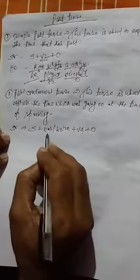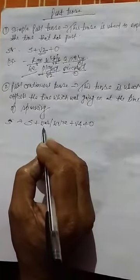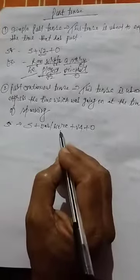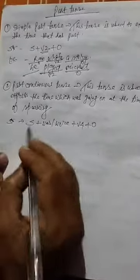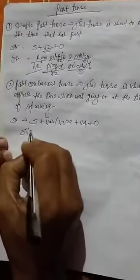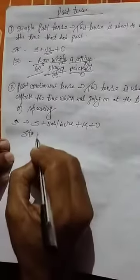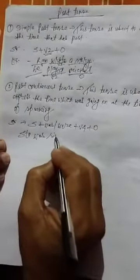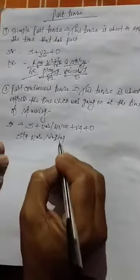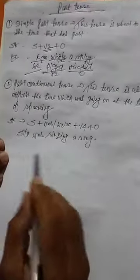Subject was. Was is used with singular subject. Were is used with plural subject. If you write singular subject, Sita was singing a song.